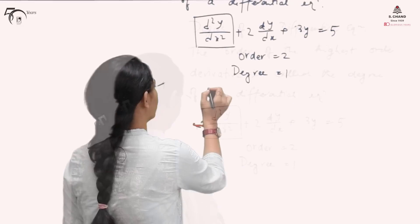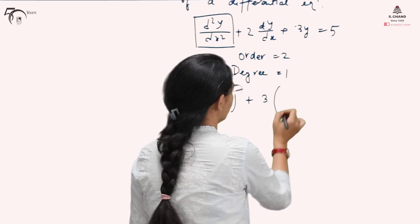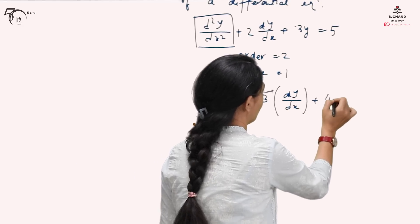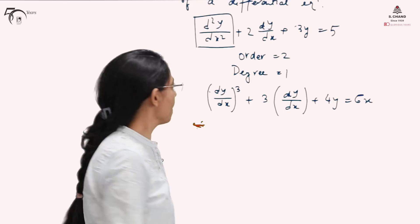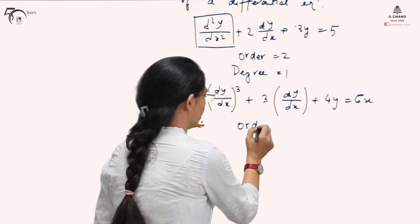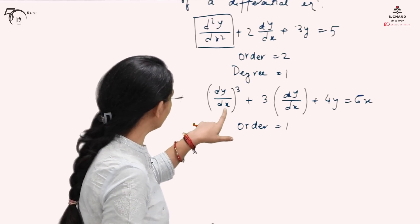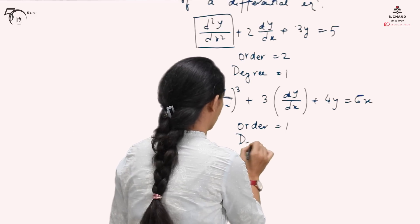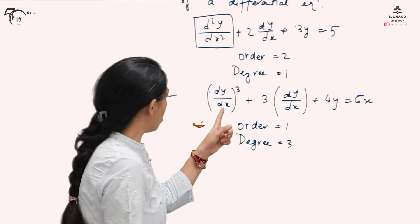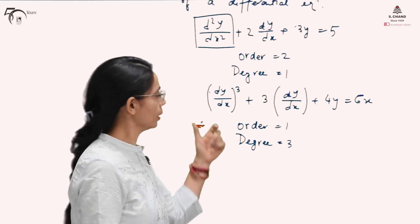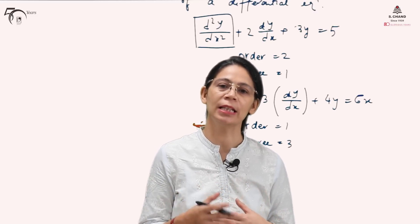Let us take another example: (dy/dx)³ + 3(dy/dx) + 4y = 6. In this equation, the order of the differential equation is 1 because the highest order derivative involved is 1. But the power of this highest order derivative is 3. Therefore, the degree of this differential equation is 3. That is how we decide the order and degree of a differential equation, which will be very important as the solution techniques depend on them.